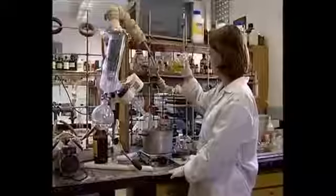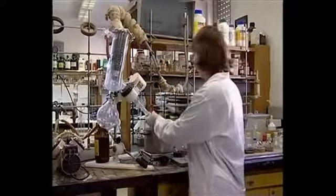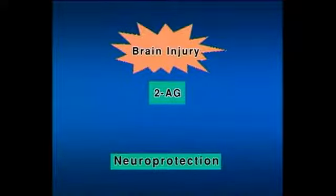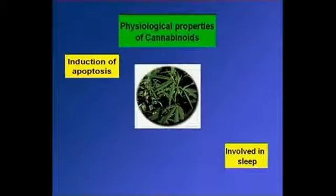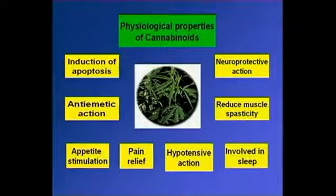Why do we have this system of receptor and endogenous cannabinoids — just in order to cause a 'high'? No. This is a very important physiological system involved in a large number of physiological and therapeutic reactions. For example, anandamide and 2-AG are involved in neuroprotection: when we have a brain trauma, the brain tries to reduce the damage by overproducing these compounds. They are also involved in anxiety, sleep, and essentially all physiological reactions that have been investigated.